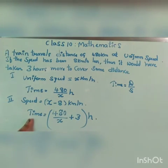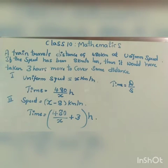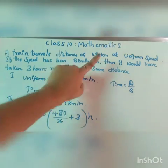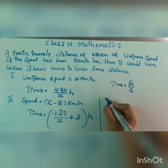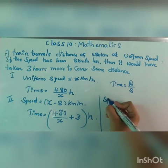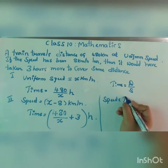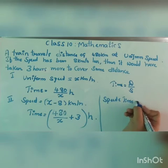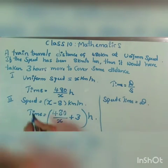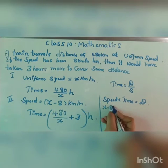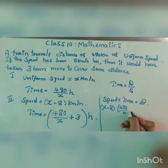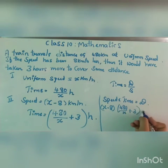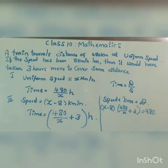So now we have the time, speed, and distance for both cases. Using the formula speed times time equals distance, we get: x minus 8, multiplied by (480 divided by x plus 3), is equals to 480.